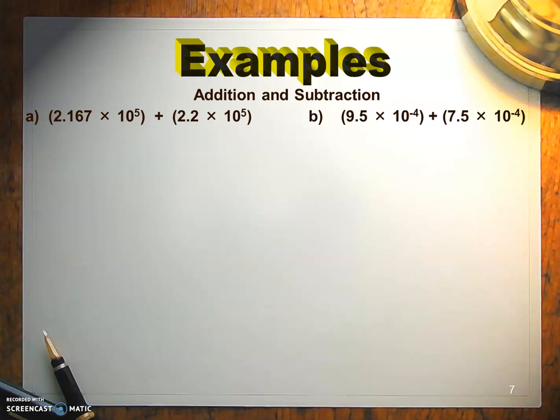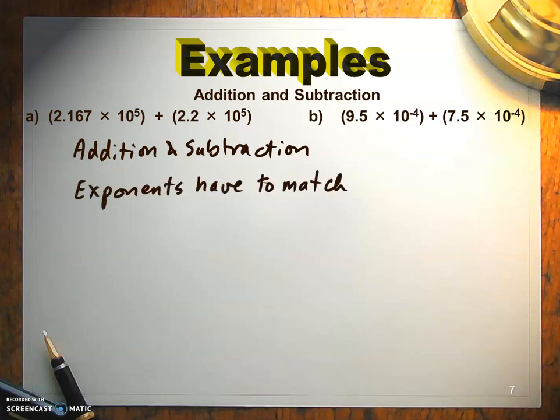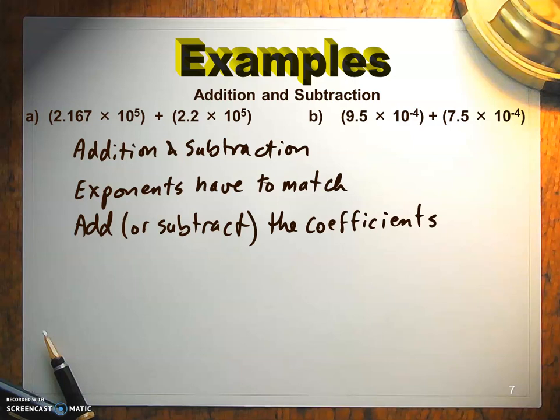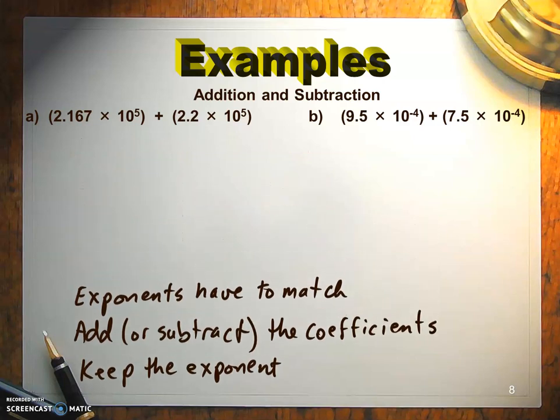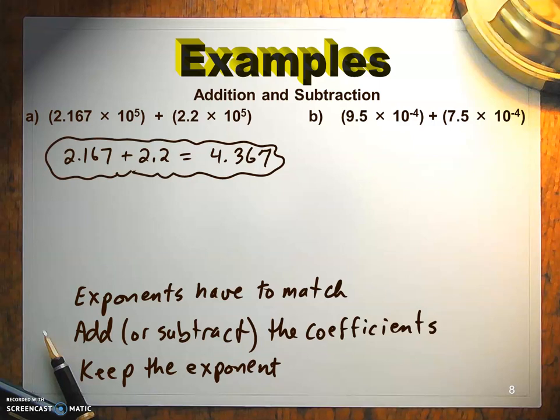When you do additions or subtractions, the exponents have to match. Now in these two examples, the exponents are already matching, so half the work is done for you already. So you just have to add or subtract the coefficients, and you're going to keep the exponent that's on the 10. You don't have to combine them at all. So in other words, just like terms when you're doing algebra, you add the coefficients together, and then you keep that same power of 10.